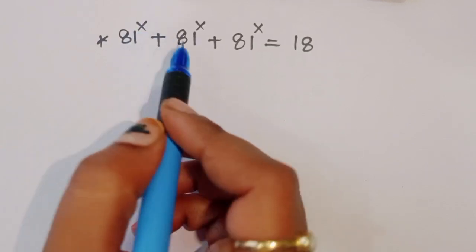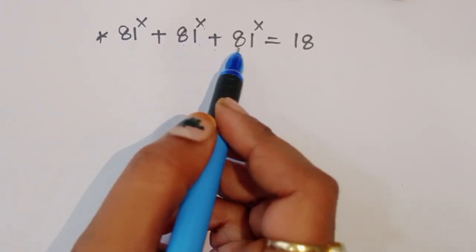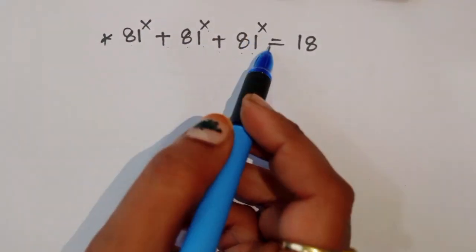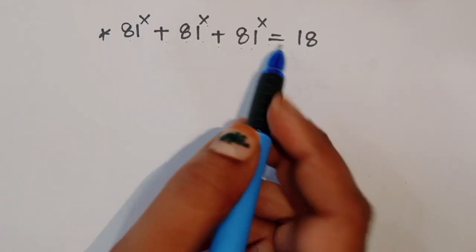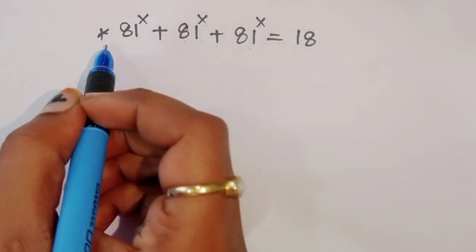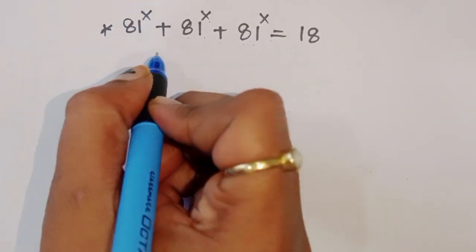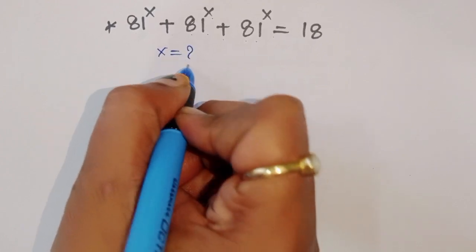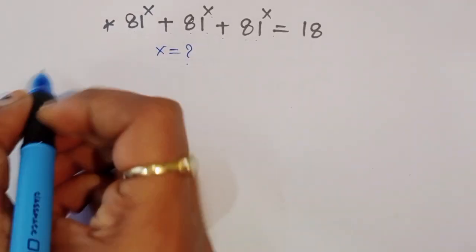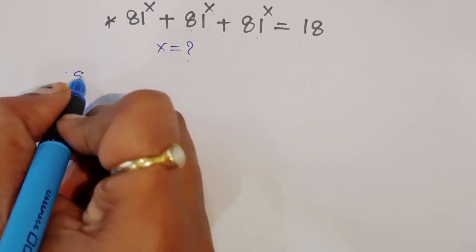81 power x plus 81 power x plus 81 power x is equal to 18. We have to find out the value of x. Let's start the solution.